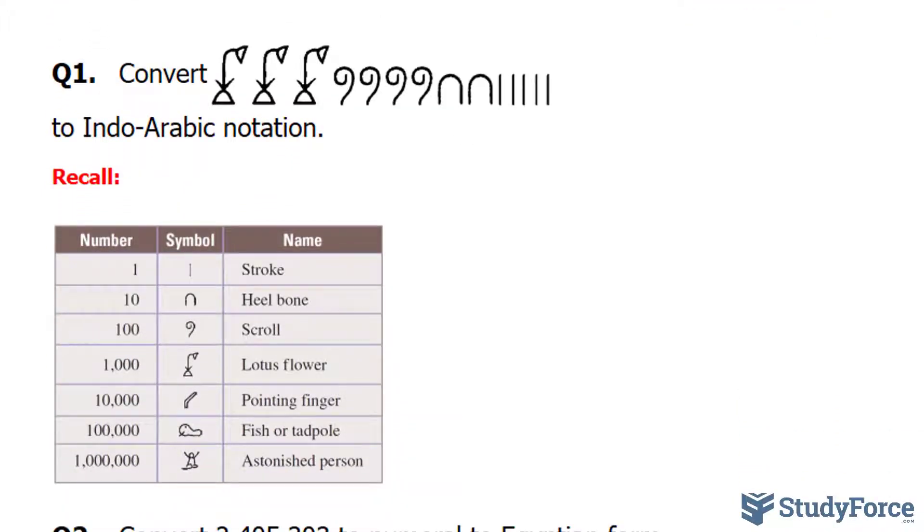Let's convert three lotus flowers, four scrolls, two heel bones, and five strokes. This is easy. We have three of these, which represents 3000, four of those, which represents 400,